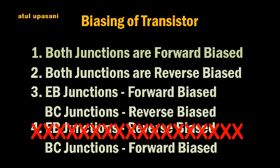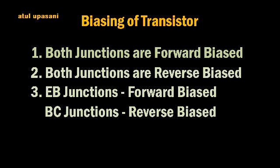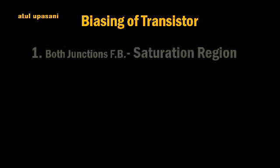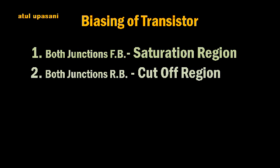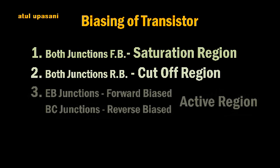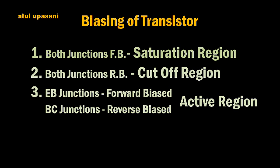So there are only three valid biasing types, and when these biasing circuits are used the transistor will operate in either the saturation region, the cutoff region, or the active region. These are the biasing methods of a transistor.